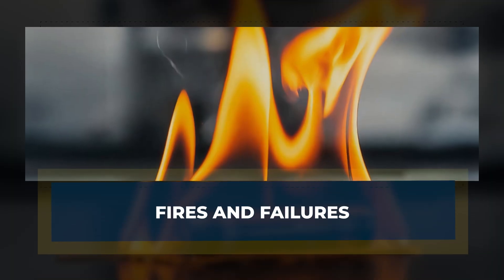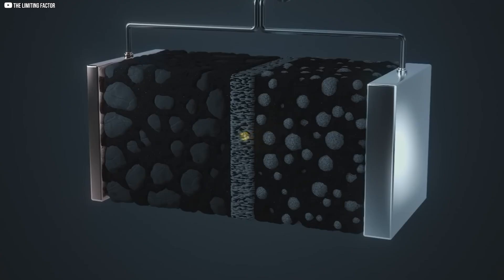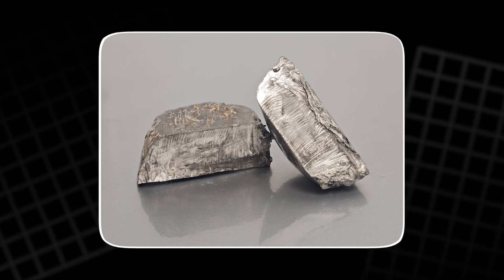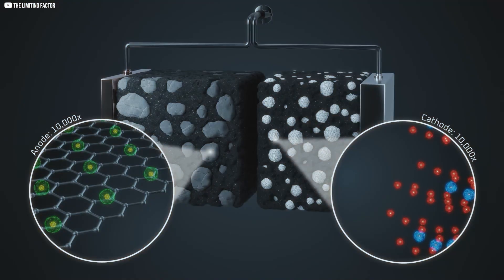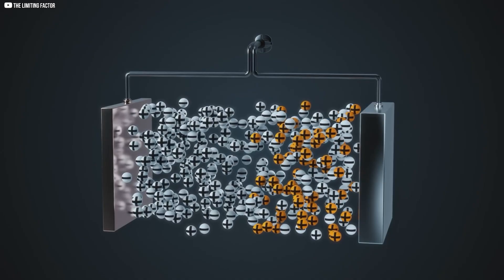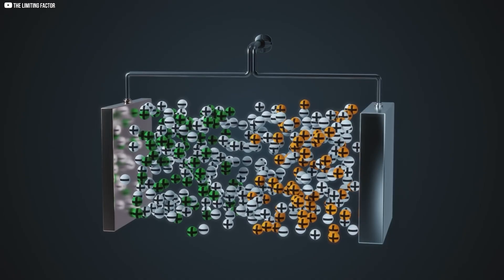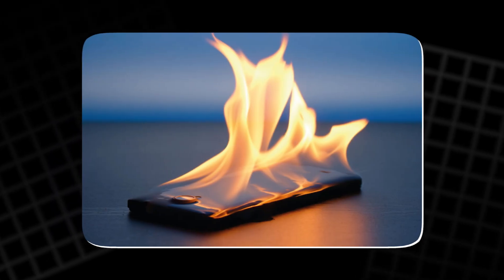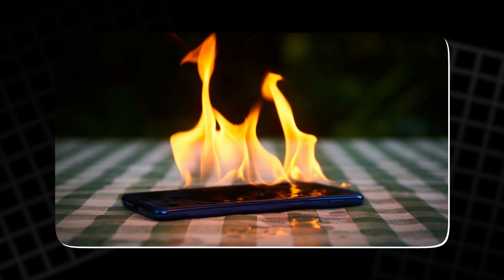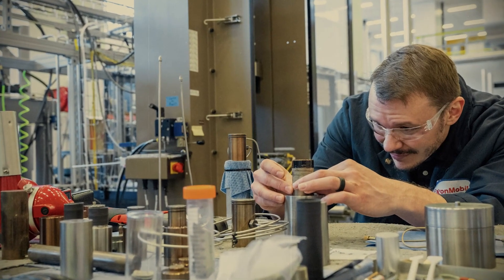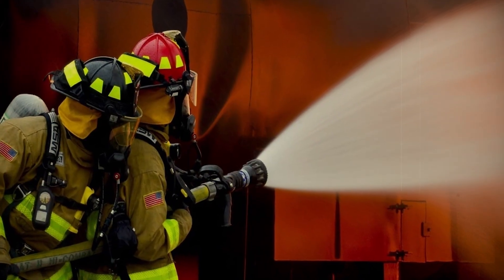Whittingham's cell worked, but its weakness was hidden in the anode. He used metallic lithium, and over repeated charges, the metal grew into spindly shapes called dendrites. These sharp branches pierced the separator and shorted the battery from within. The results were violent. Cells overheated, burst into flames, and sometimes exploded.